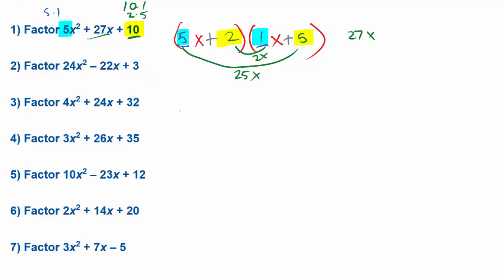You may want to check the whole thing by foiling the entire problem out just to be sure. But that should be our answer here for this one. And if you foil that whole problem out, you should find that that will give you 5x squared plus 27x plus 10.